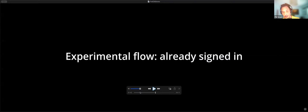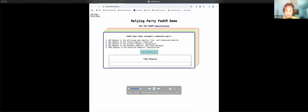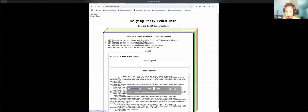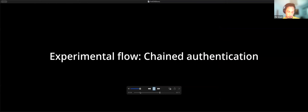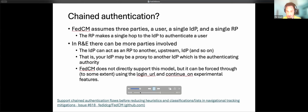That was the full flow. If you don't need to sign in the first time — you already have an active session with the IDP that satisfies the RP's request — then the flow is much simpler. The next important use case for R&E is chained authentication. FedCM assumes three parties: a user, a single IDP, and a single RP. But in R&E, the IDP could act as an RP to another upstream IDP — proxying to your actual authenticating authority. FedCM doesn't directly support this model, but using the login URL and continuation features, I've tried to see how that would look.